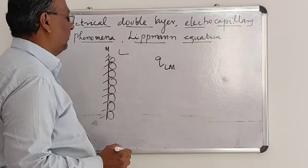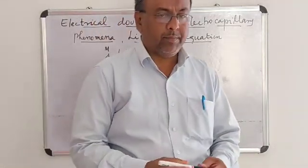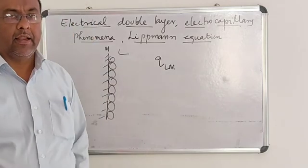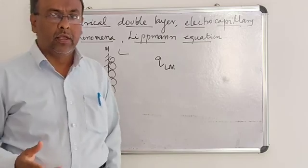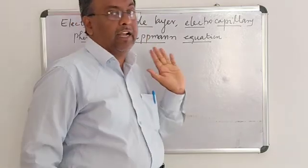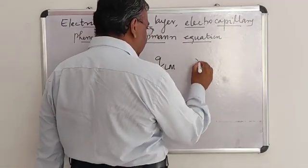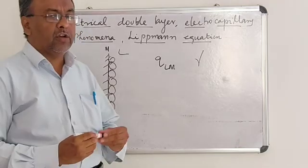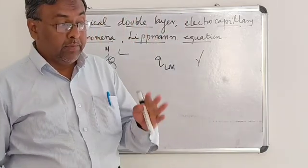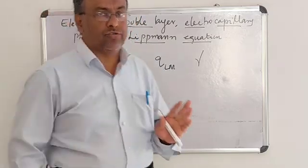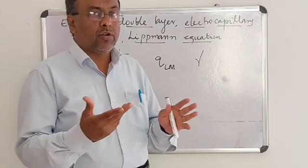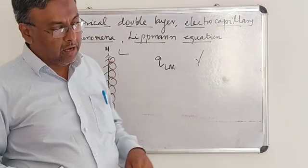In electro-capillary phenomena, what happens when the electrolyte and the electrode are in contact with each other: a potential develops, and not only that, the interfacial tension γ (gamma) is also developed between the metal and the electrolyte. Sometimes the metal remains stationary while the electrolyte solution moves. Because of this, the potential that arises is called electro-kinetic phenomena or electro-capillary phenomena.